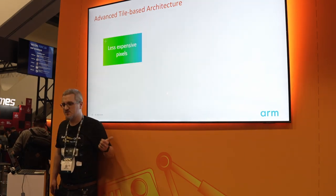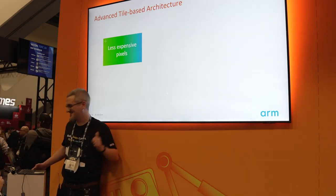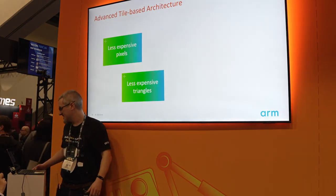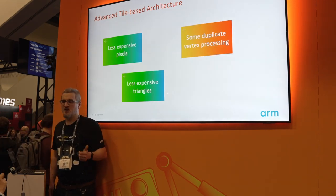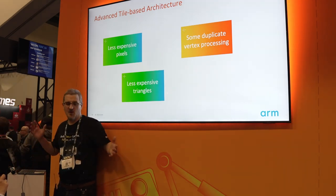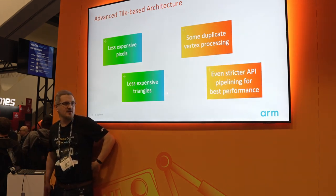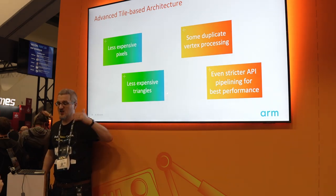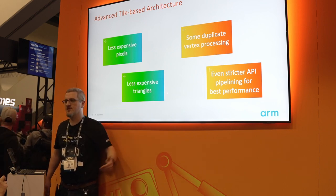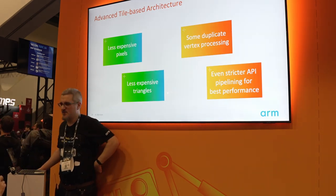With advanced tile-based rendering on ARM fifth generation GPUs you get all the benefits of being tile-based: less expensive pixels, and less expensive triangles because we can keep bandwidth on chip during the deferred vertex shading phase. There will be some duplicate vertex processing - we process enough during binning and then reprocess a little during the main phase - so very complicated vertex meshes can cause problems. We also have even stricter API requirements for pipelining since deferring vertex shading means vertex stage dependencies in Vulkan get released later. The good news is these issues are very uncommon in real content.